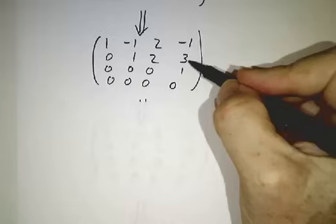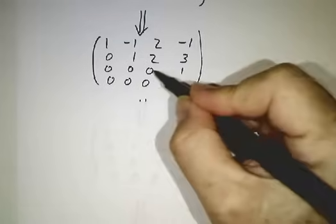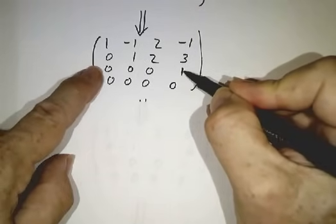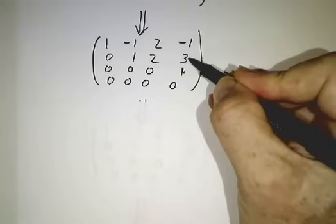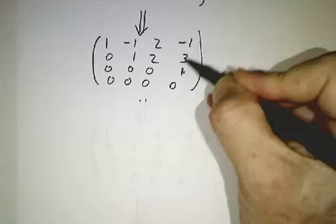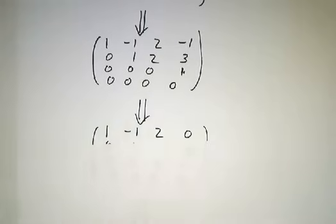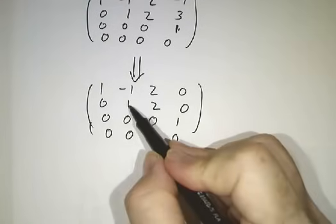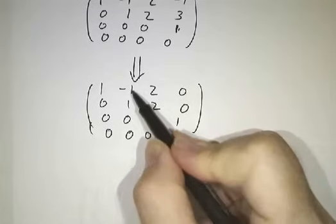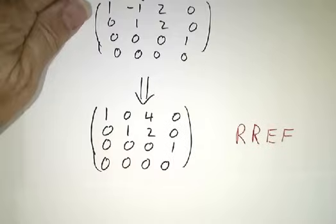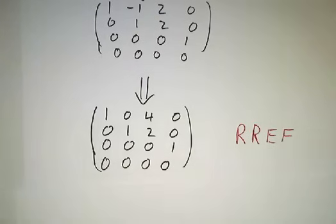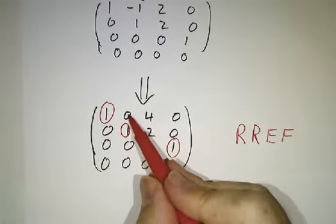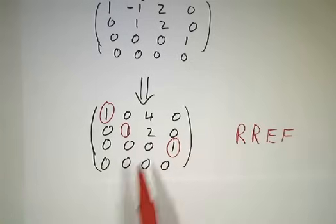Now we want to get rid of the terms above the pivots, working from right to left. Looking at the last pivot column, we subtract three times the third row from the second row, and add the third row to the first row, eliminating the three and the negative one. Finally, to clear above the second pivot, we add the second row to the first. And there we go — reduced row echelon form: the pivots are all equal to one, the spaces above the pivots are all equal to zero, and we win.